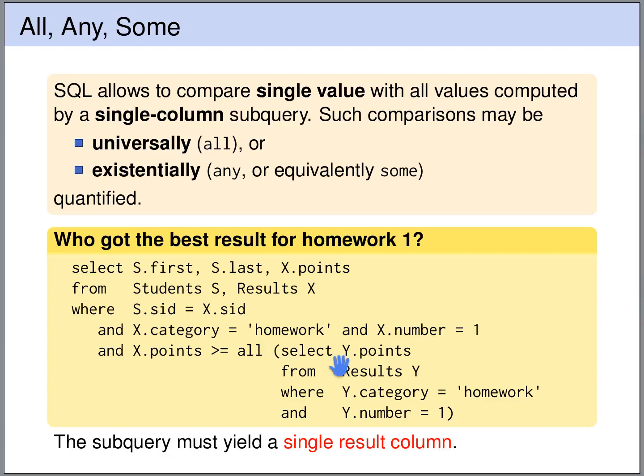On this slide we see an example use of the all keyword. Here we have a comparison that compares x.points with all the values computed by the subquery. This comparison is true if x.points is greater or equal than all the values in a subquery. This can be an arbitrary comparison. And the all means that we universally quantify this comparison.